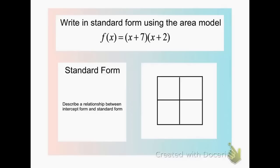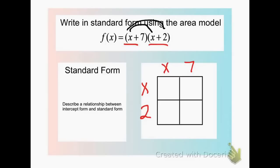If I take my factors x plus 7 and x plus 2, remember you put your x on top of the first box and your 7 on top of the second one. Then you take your second factor — x beside the first box and 2 beside the second one. We multiply because we're trying to distribute. So x times x gives us x squared.